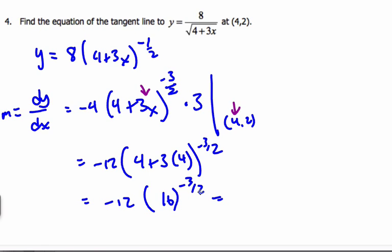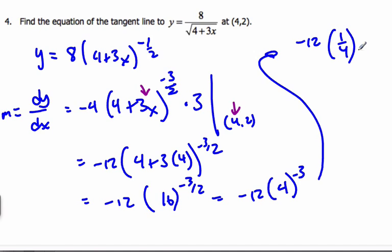Doing this math, the square root of 16 is 4, so it's negative 12 times 4 to the negative 3. Going to the top here, I know it's negative 12 times 1 over 4 cubed, which is negative 12 over 64.